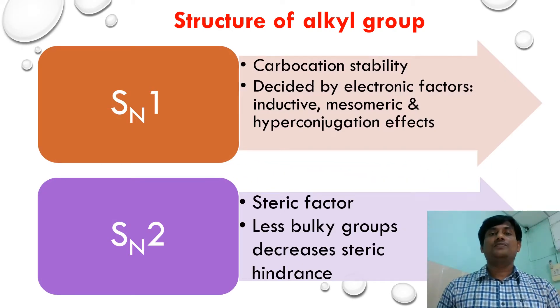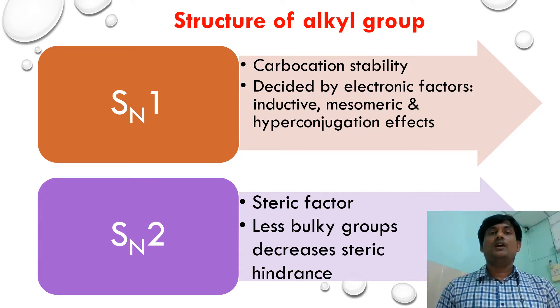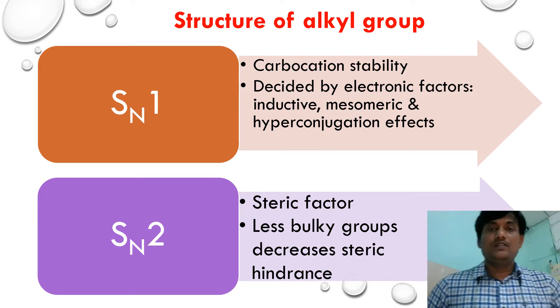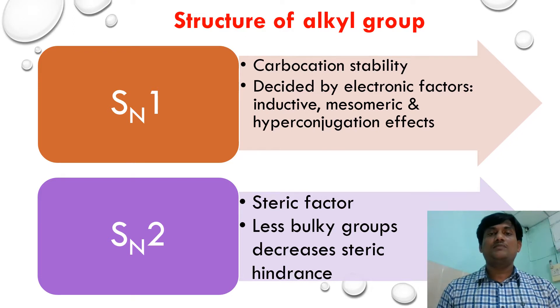We will discuss the structure of the alkyl group. In an SN1 reaction, the rate depends on the stability of the carbocation generated in the solvolysis system. The greater the stability of the carbocation, the higher the rate of the SN1 reaction. The stability of the carbocation depends on electronic factors such as inductive effect, mesomeric effect, and hyperconjugation.